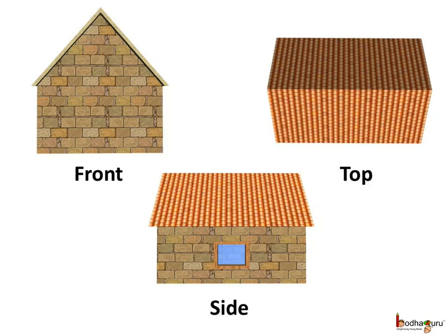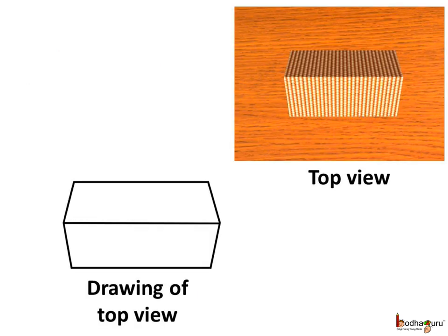Now we know how a solid shape looks different from different angles. Like a house looks different if we look at it from different views, like the top view,